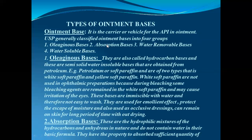The four USP ointment base categories are: oleaginous bases, absorption bases, water-removable bases, and water-soluble bases. Oleaginous bases — as the name indicates, these are oily bases, also called hydrocarbon bases. They are semi-solid, water-insoluble bases obtained from petroleum. Examples are petrolatum or soft paraffin, which is of two types: white soft paraffin and yellow soft paraffin. White soft paraffin is not used in ophthalmic preparations because during bleaching — the process of converting yellow paraffin to white — bleaching agents are used.